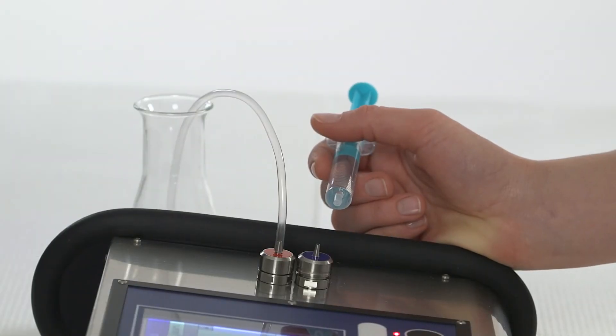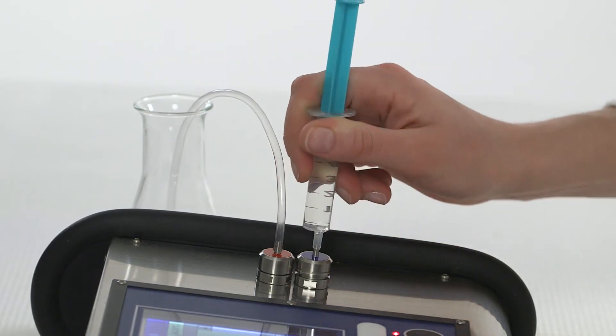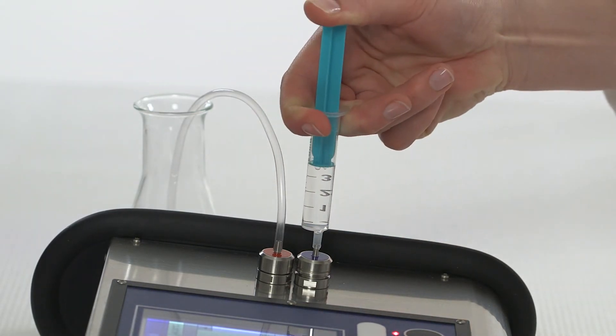At the end of an analytical run, clean the instrument with at least 15 milliliters of cleaning solution and rinse the system with distilled or deionized water.